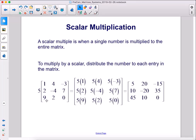So here we have a matrix and we have a scalar of 5 out front, multiplying. So every number in the matrix will be multiplied by 5. So here we have 1 times 5 gives us 5. Here we have 4 times 5 gives us 20. Negative 3 times 5 is negative 15, 2 times 5 is 10.